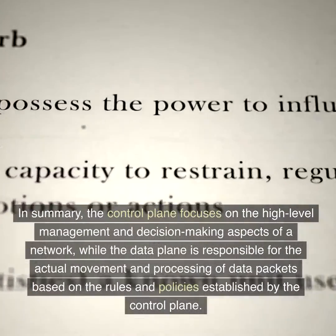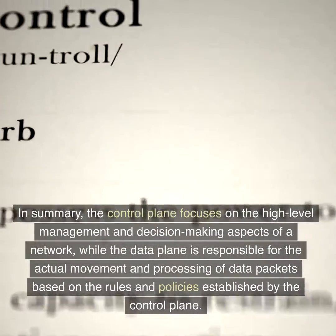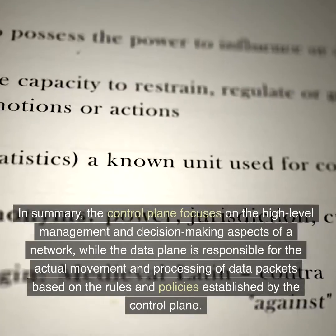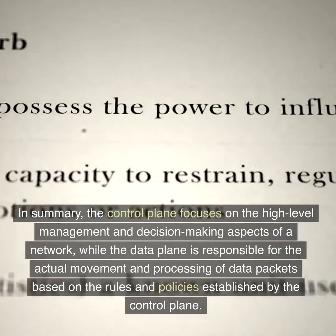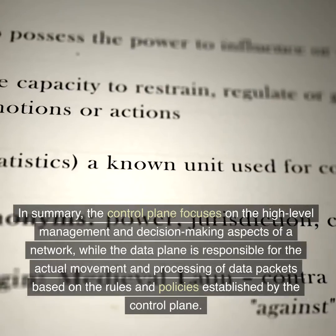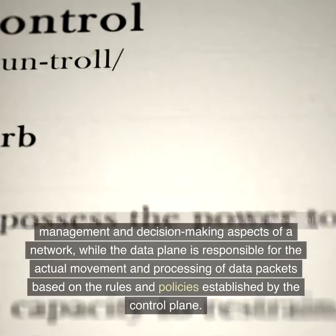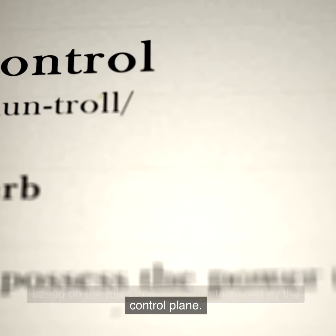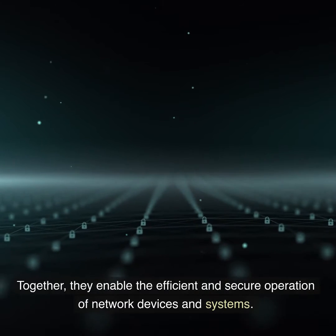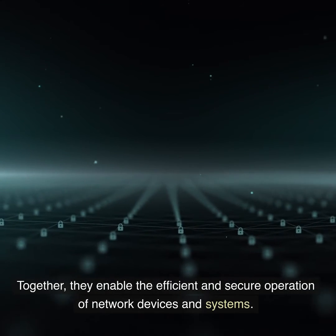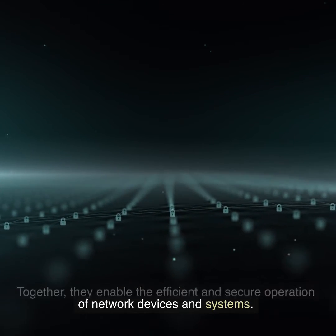In summary, the control plane focuses on the high-level management and decision-making aspects of a network, while the data plane is responsible for the actual movement and processing of data packets based on the rules and policies established by the control plane. Together, they enable the efficient and secure operation of network devices and systems.